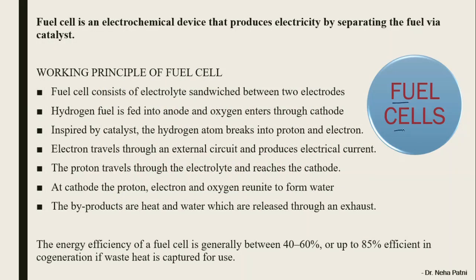As the name suggests, fuel cells are nothing but cells. So obviously when it is a cell, it has to have an anode, a cathode, and an electrolyte. When 'fuel' is also written along with it, that means there is a role of fuel as well. A fuel cell basically is an electrochemical device that produces electricity by separating the fuel via a catalyst. You are converting chemical energy into electrical energy using a fuel — that is why it is called a fuel cell. We are going to use hydrogen gas as the fuel. Hydrogen needs to be dissociated, and for that you need a catalyst — without a catalyst it will not work.